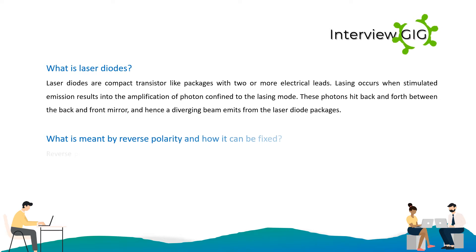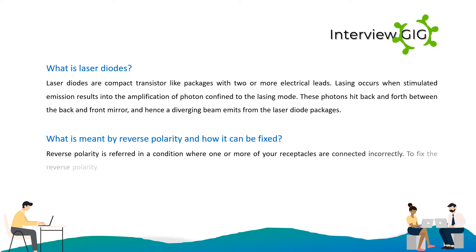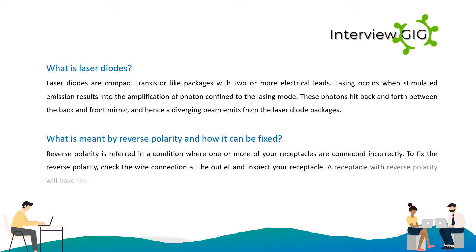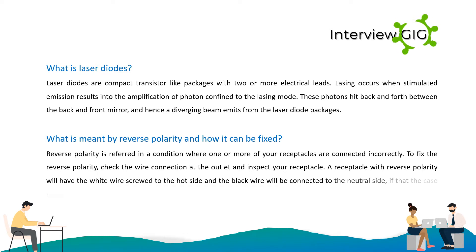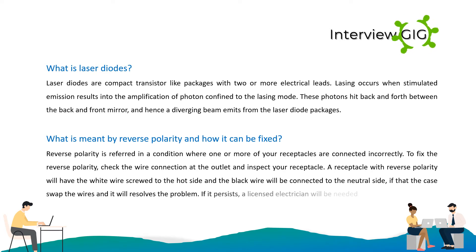What is meant by reverse polarity and how can it be fixed? Reverse polarity refers to a condition where one or more of your receptacles are connected incorrectly. To fix reverse polarity, check the wire connection at the outlet and inspect your receptacle. A receptacle with reverse polarity will have the white wire screwed to the hot side and the black wire connected to the neutral side — in that case, swap the wires to resolve the problem. If it persists, a licensed electrician will be needed.